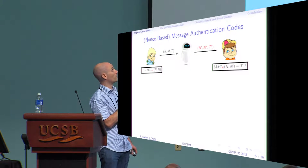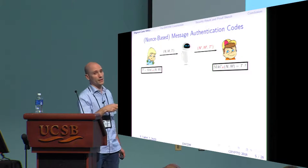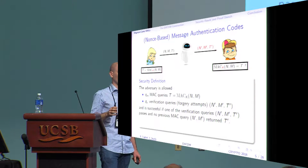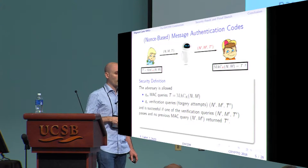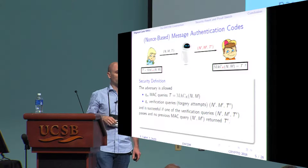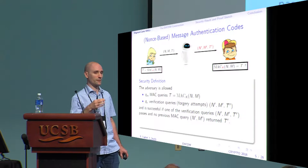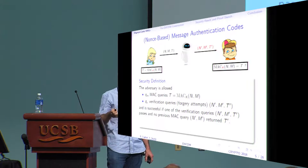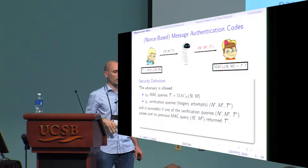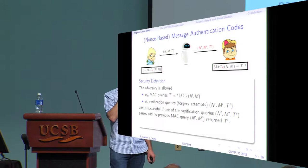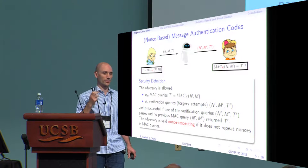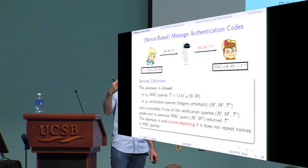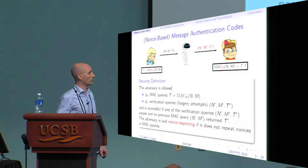We don't want the adversary to be able to forge tags, i.e., compute tags for new messages it hasn't seen before. Security is defined formally as follows: the adversary has two oracles — a MAC oracle and a verification oracle. It can make Q_M MAC queries and Q_V verification queries, which can be seen as forgery attempts. The adversary succeeds if one verification query passes and was not obtained from the MAC oracle. The adversary is nonce-respecting if it does not repeat nonces in the MAC oracle.